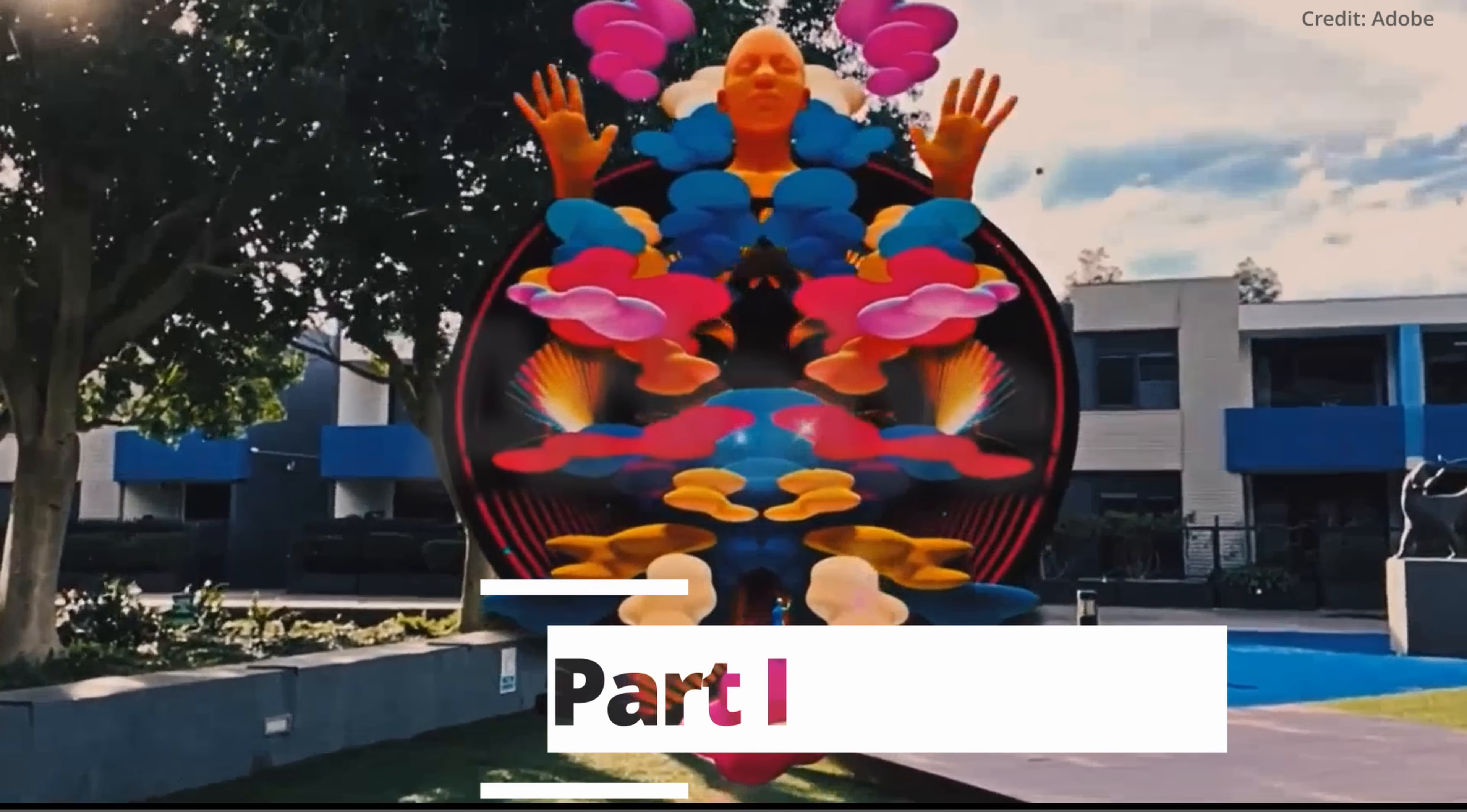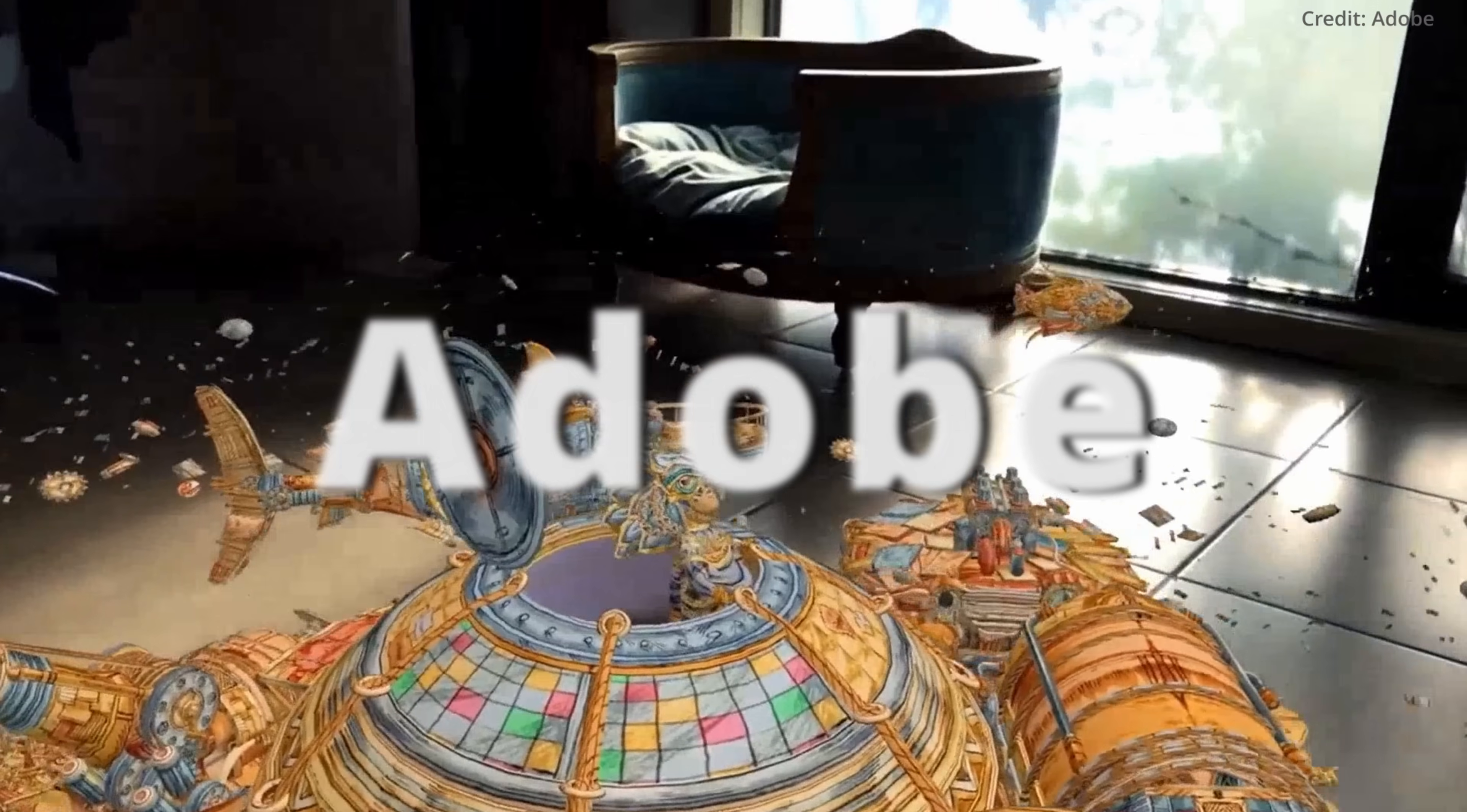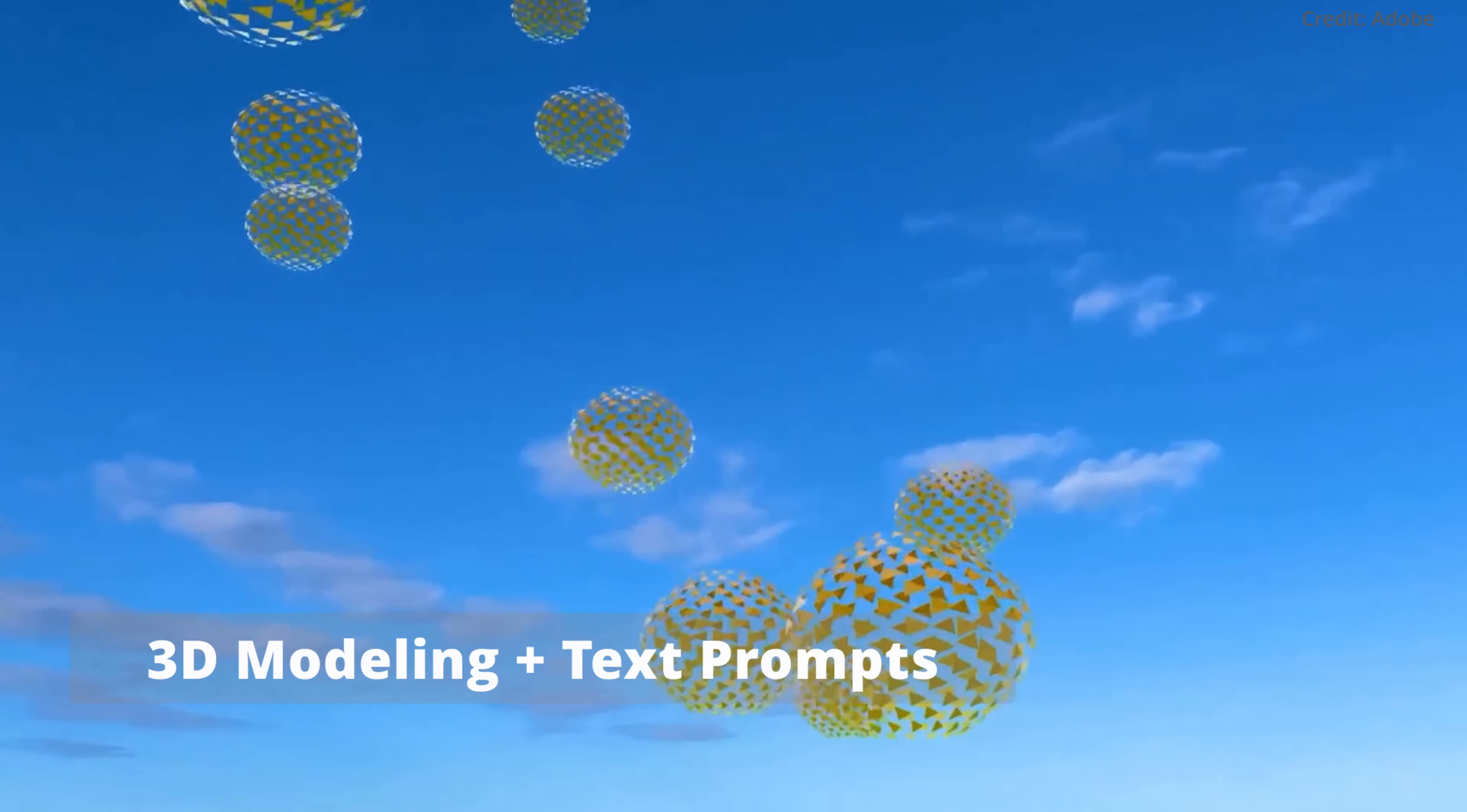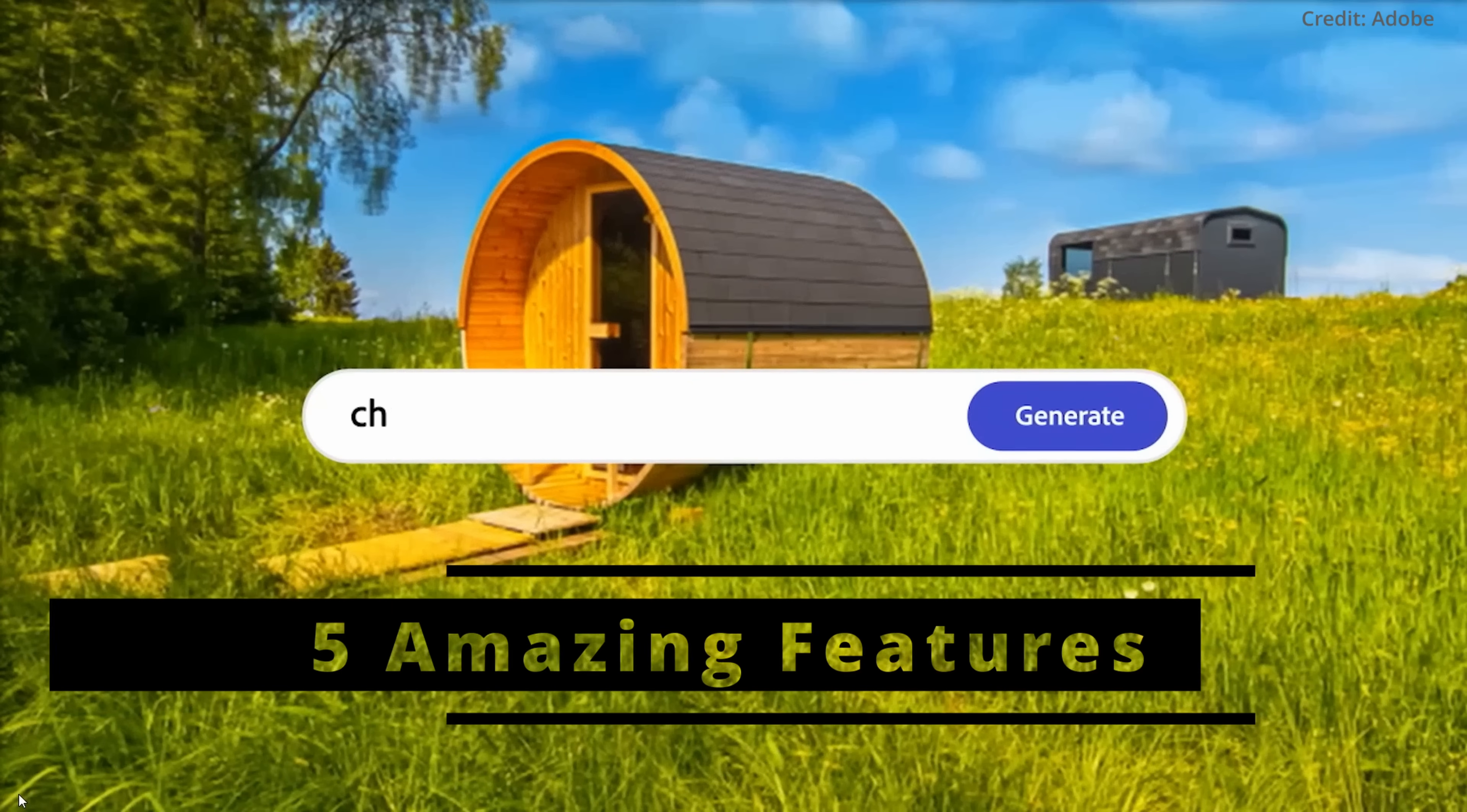In a monumental leap in generative AI, U.S. graphics heavyweight Adobe has unveiled its breakthrough AI tool called Project Gingerbread, which combines 3D modeling and text prompts to provide unprecedented precision in AI media generation by using five amazing features.